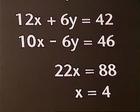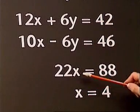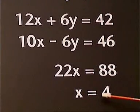In rule 3 we solve a linear equation in x. 22x equals 88, so x equals 4.